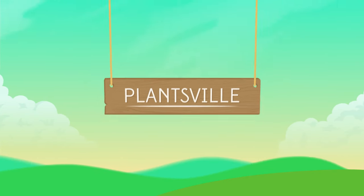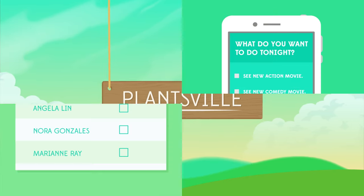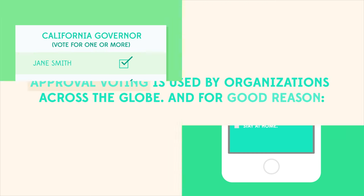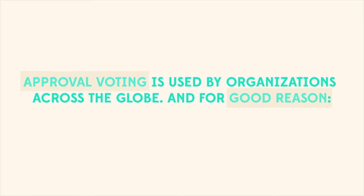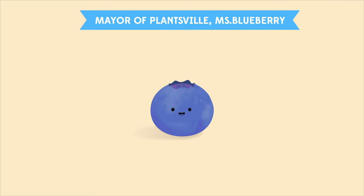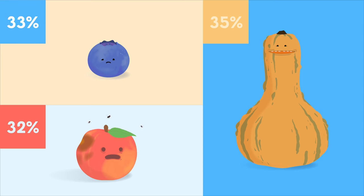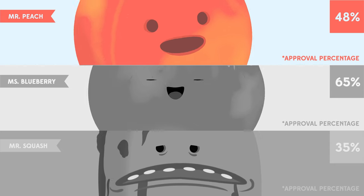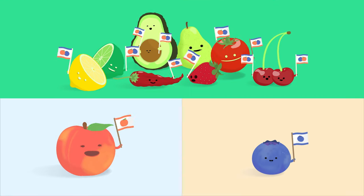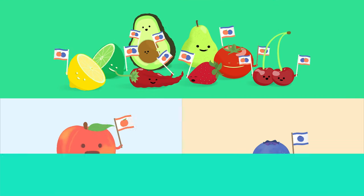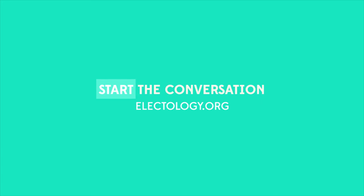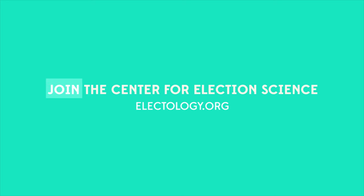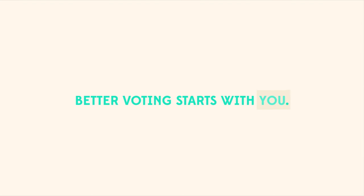Approval voting is more than just a smart idea in Plantsville. It's a smart idea anywhere you vote. Approval voting is used by organizations across the globe, and for good reason. It's democratic because the candidate with the most support wins. It removes the spoiler effect. Even losing candidates get an accurate reflection of support. And voting your favorite never hurts you. Start the conversation on approval voting and share this video. Then join the Center for Election Science at electology.org. Better voting starts with you.